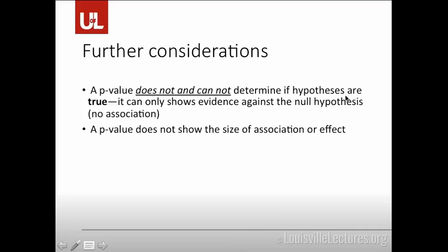A p-value does not and cannot determine if hypotheses are literally true — it can only show evidence against a null hypothesis. Just because the p-value is less than 0.05, you have enough evidence to reject the null hypothesis, but that doesn't automatically mean this is 100% true 100% of the time; there are still other factors that could change things. A p-value also doesn't show you the size of your association or effect — if you have a really small p-value, you could still have a really small effect size.